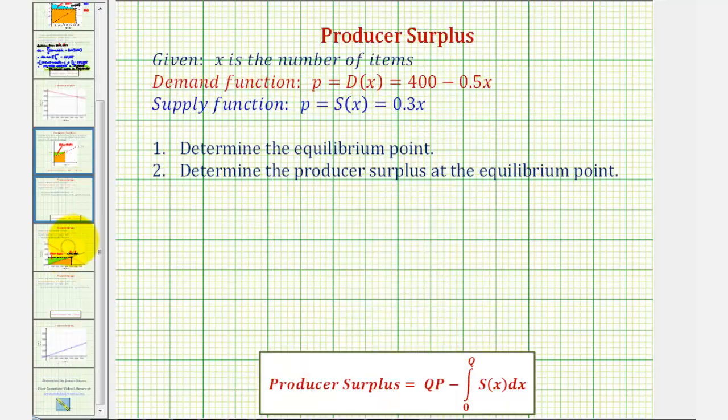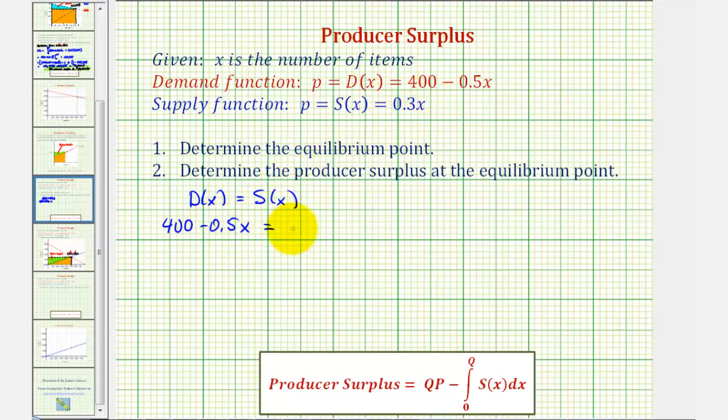So going back to our example, the first step is to find the equilibrium point, which is the point where the supply and demand are equal to each other. So if we want to determine where d of x equals s of x, that would occur when 400 minus 0.5x equals 0.3x.